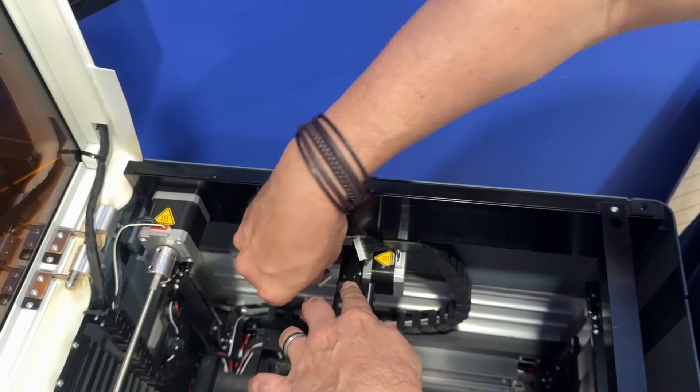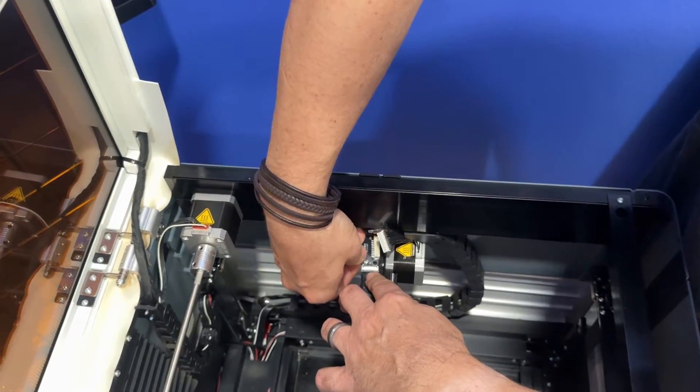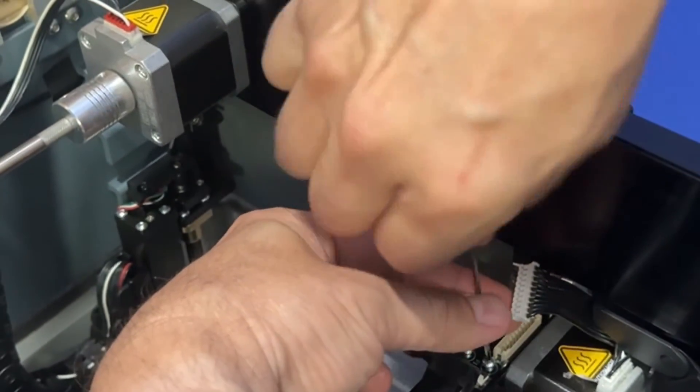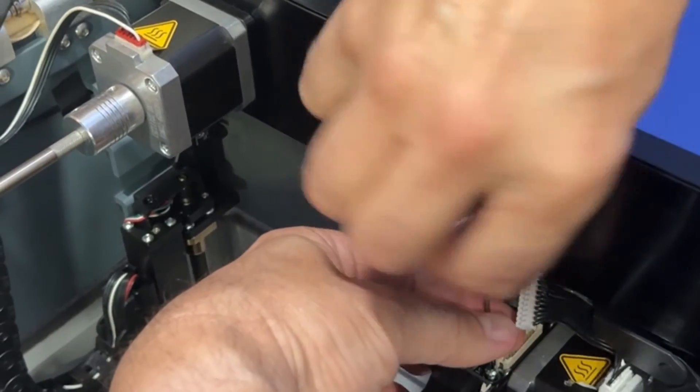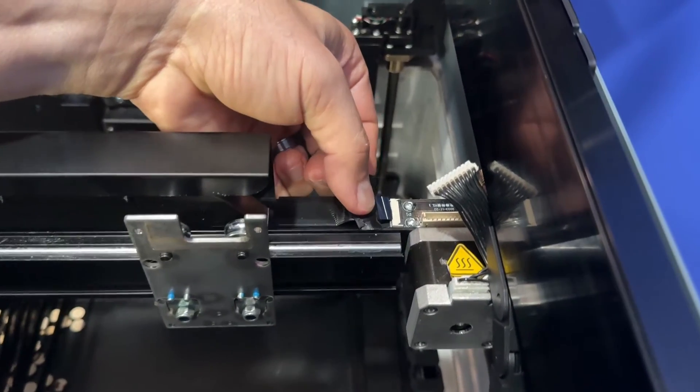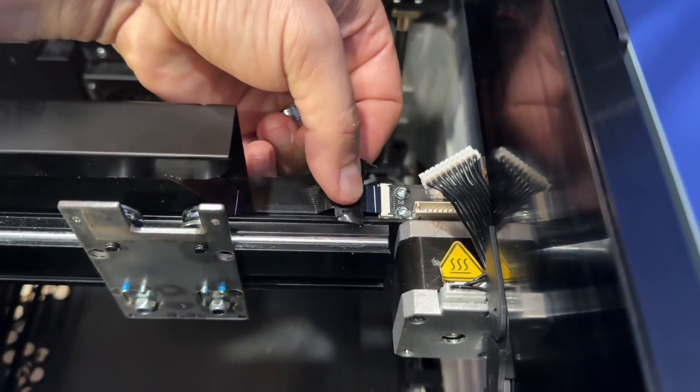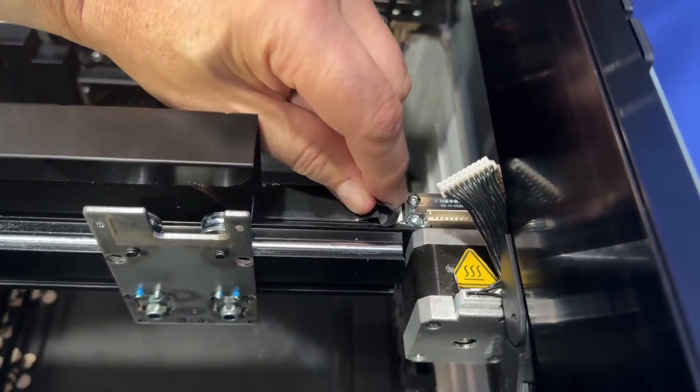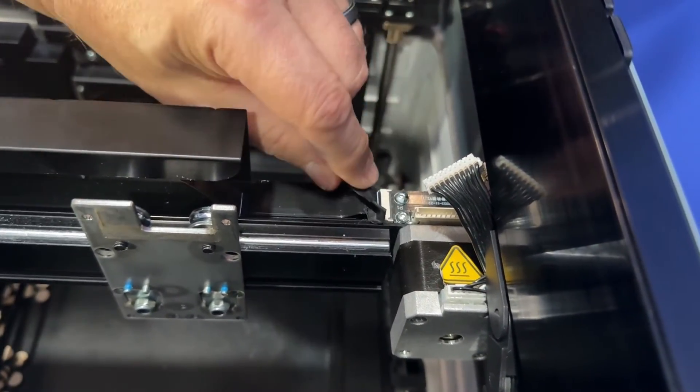And two screws hold this one down. Just put the two screws back in that you took out before. And there's a couple extras in the kit and then reconnect this ribbon cable back to that power board. Again, I think it's a power board. I'm not exactly sure what's going on here.